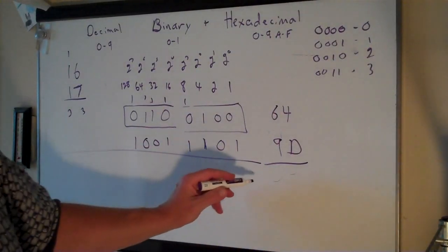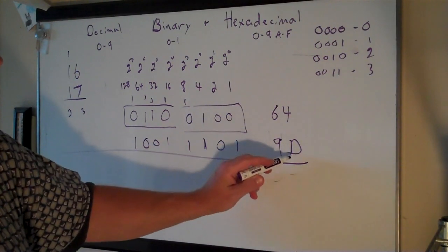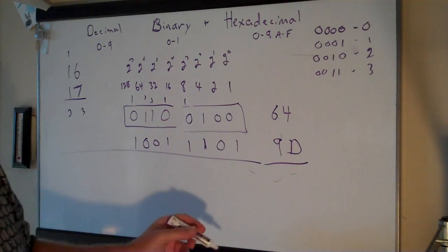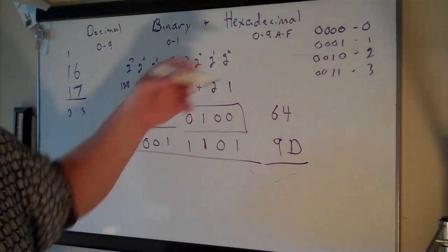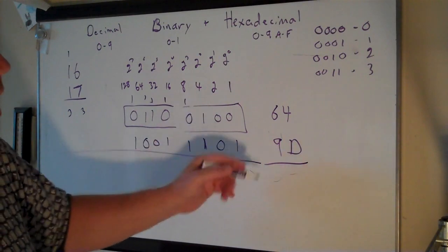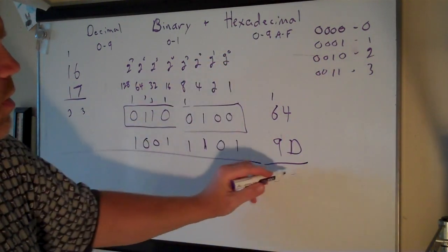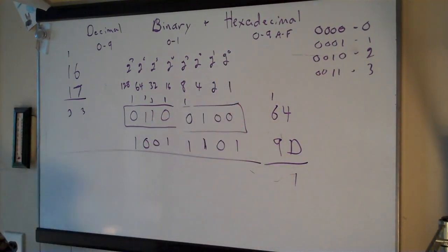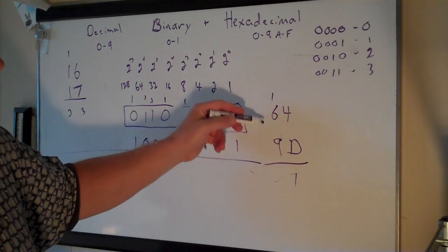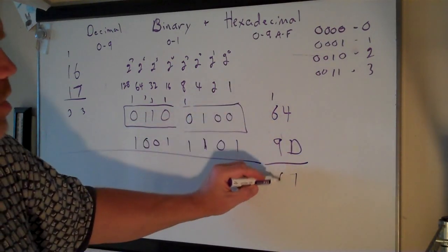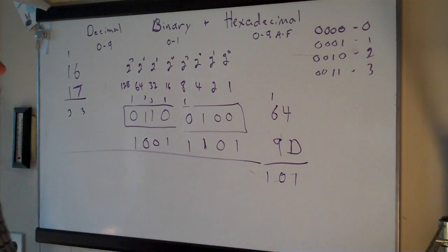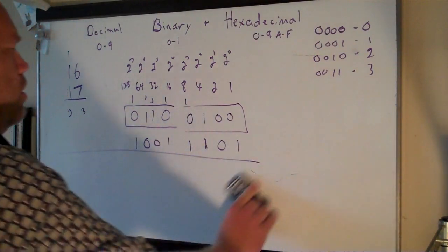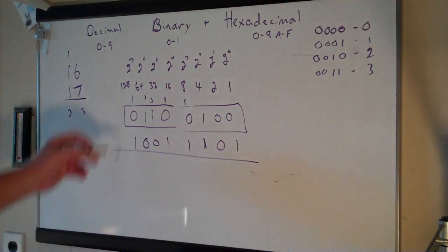If you want to do the addition in hexadecimal, you just have to know that D is 13. So 13 plus 4 is 17, and since your system only goes up to 16, you carry the 16 — which is a 1 in hexadecimal. Then adding those together you'd get a 0 and carry another 1, so it carries out of the number in the same way.